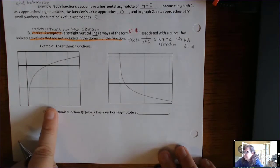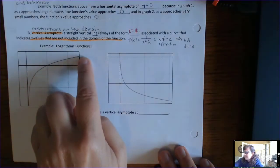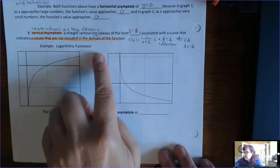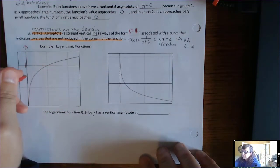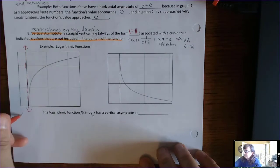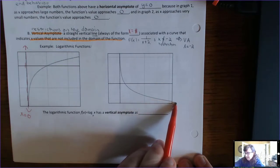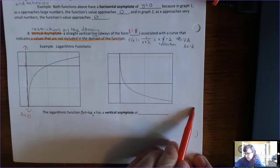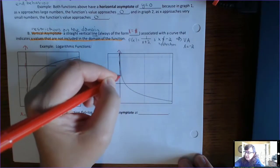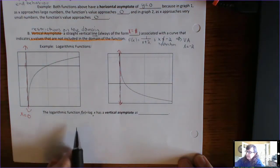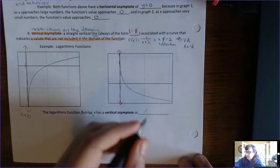If you look at this graph of a log function, something interesting is happening — it seems to be increasing and not leveling off. So there's not a horizontal asymptote, but it does seem to be hugging the vertical x-axis. It turns out that there is a vertical asymptote at x equals 0. Same thing for this other log function — the y values are getting smaller and smaller, but the function doesn't want to pass the vertical line at x equals 0. The function f(x) = log base a of x has a vertical asymptote at x equals 0.